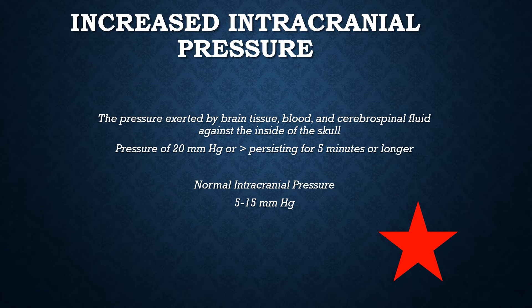We've been talking about pressures in the brain increasing and decreasing according to what our CSF, blood, and brain tissue does. You can see how an increase in intracranial pressure could impact perfusion and potentially cause shifting or herniation of brain tissue. But what is increased ICP or IICP, and how do we determine if it's too high? Intracranial pressure is defined as the pressure exerted by those three components — brain, blood, and CSF — against the inside of that inexpandable vault. We call this IICP when the pressure in the skull is 20 millimeters mercury or higher and it persists for five minutes or longer. A normal ICP fluctuates between 5 and 15 millimeters mercury.